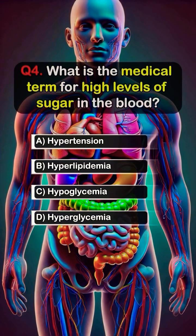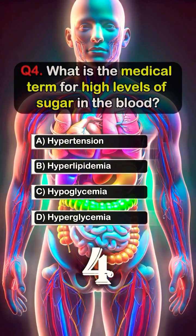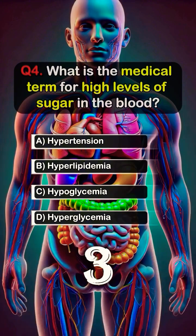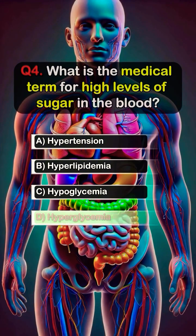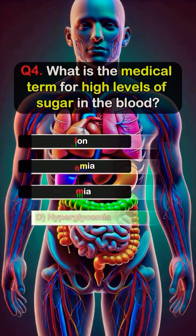Question 4. What is the medical term for high levels of sugar in the blood? Answer D. Hyperglycemia.